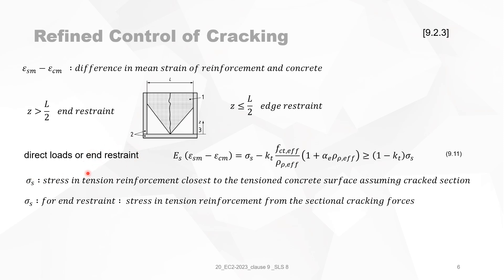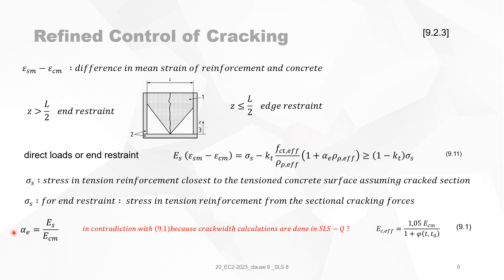This applies for direct loads. When you have two layers of reinforcement in an end-restraint situation, you do not have a load coming from the outside. The stress in the tension reinforcement from the sectional cracking forces is then equal to Sigma S.